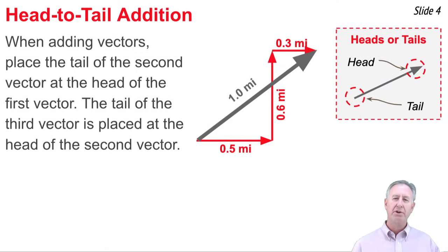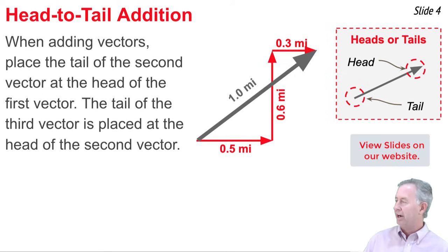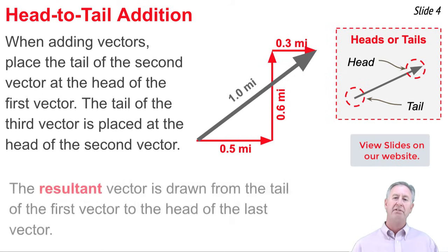This story of your trip to your friend's demonstrates a head-to-tail addition of three vectors. You have to understand that a vector has a tail and a head, the head being the arrowhead of a vector. And when you add a second vector to a first vector, you do it with the head-to-tail method. You place the tail of the second vector at the arrowhead of the first vector. And when you add the third vector to the second vector, you place the tail of the third vector at the arrowhead of the second vector.